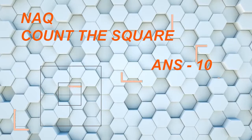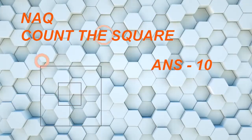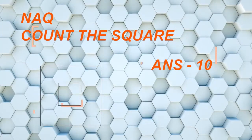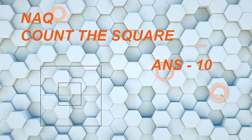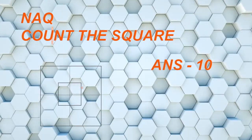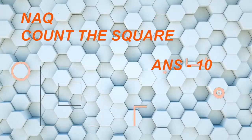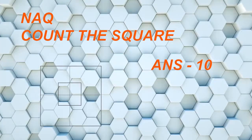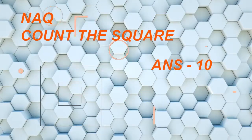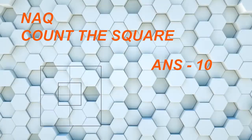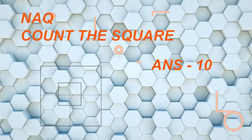In numerical answer type, you always have to give a number as your answer. For example, if I ask you how many squares, or triangles, or faces — there is no option given. You have to give the answer as a number. So if the total number of squares is 10, the answer will be 10.